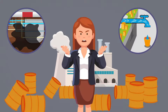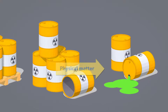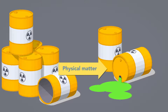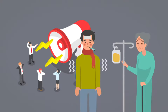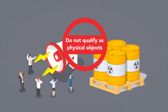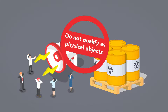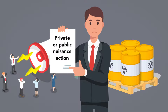If a defendant allows a physical contamination to escape from her control and enter onto another's land, she may be liable for trespass under the common law. Still, it's important to note that contaminants are physical matter. Things like radiation, noise, and vibrations can be harmful or damaging to human health and the natural environment, but since they do not qualify as physical objects, they can't form the basis for a trespass action. In these cases, plaintiffs may seek relief through private or public nuisance actions instead.